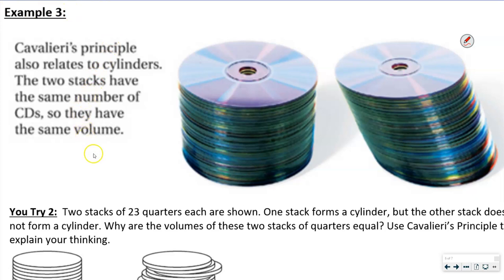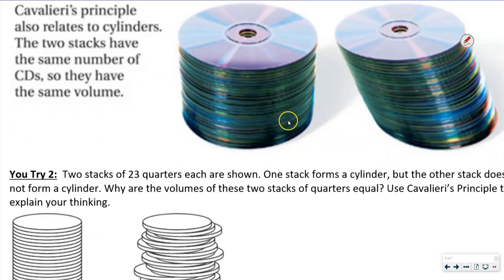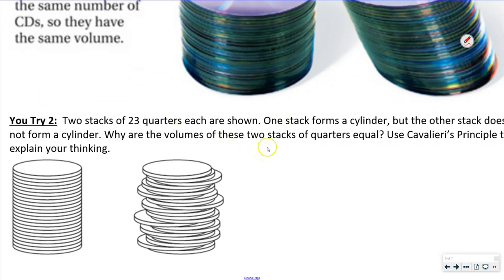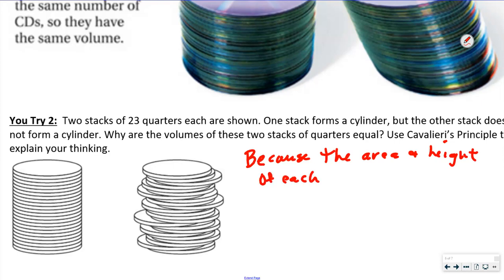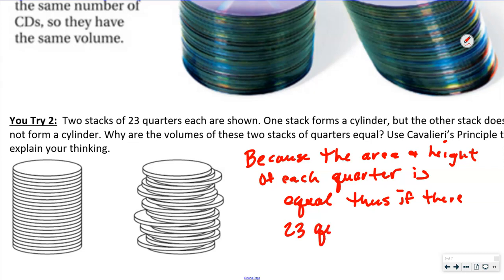Example 3: Cavalieri's Principle also relates to cylinders. Two stacks have the same number of CDs, so they have the same volume. Whether we tip the stack or not, every CD has the same area and the same height, so if we slide them over one another they will have the same volume. You try: two stacks of 23 quarters are shown — one forms a cylinder, but the other does not. The volumes are equal because the area and height of each quarter is equal, and since there are 23 quarters, the volume is the same.